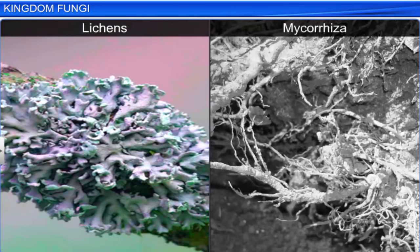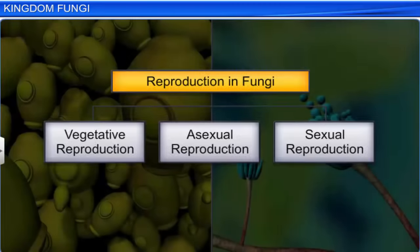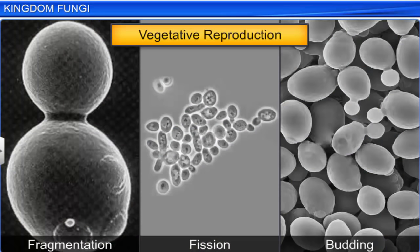In both lichens and mycorrhiza, the relationship shared by fungi is mutualistic. Fungi can reproduce vegetatively, asexually, as well as sexually. Fungi reproduce vegetatively by fragmentation, fission, and budding.